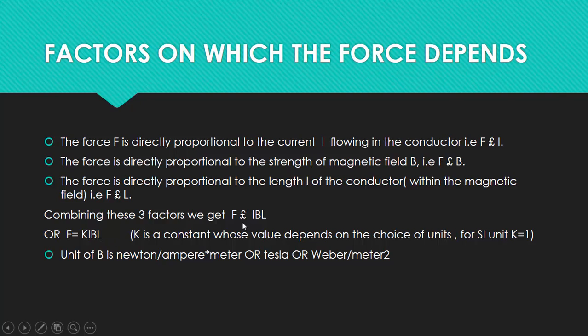When there is a directly proportional symbol, by converting it into an equals sign, we have to put a constant here. So F becomes equal to K·I·B·L.